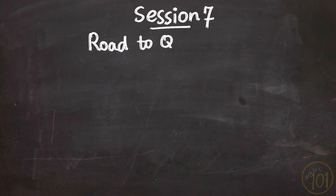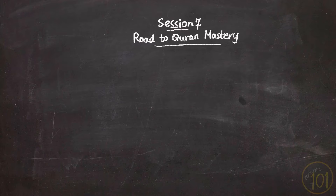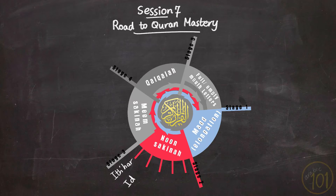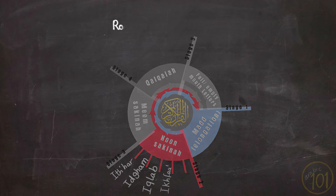This is session 7 of stage 2 of the Road to Qur'an Mastery series. In the course of the last 6 sessions, we learned 4 different skills of Noon Sakinah: Idhar, or showing the Noon; Idgham, merging the Noon; Iqlab, which is flipping; and finally Ikhfa, which is hiding the Noon. This is the final session of this stage.